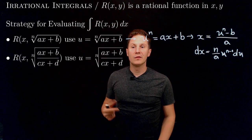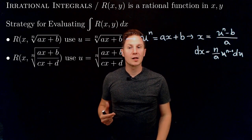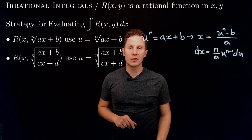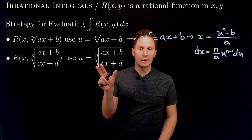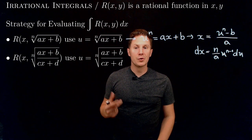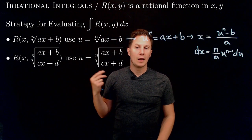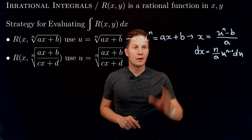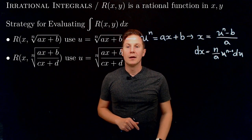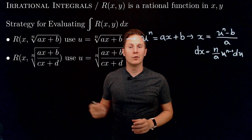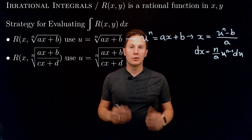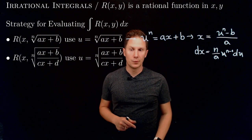Similarly, if y is the nth root of (ax + b)/(cx + d), where a, b, c, d are constants, substituting the entire nth root as our new variable u can be shown in a similar way to turn the irrational integral of r into a rational integral in terms of u.